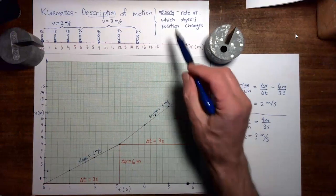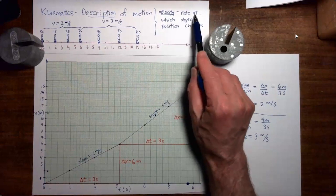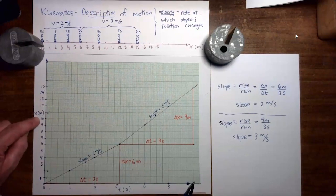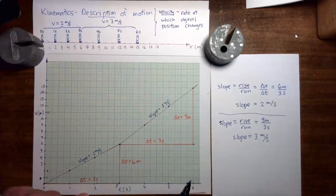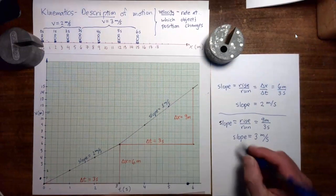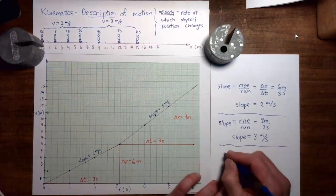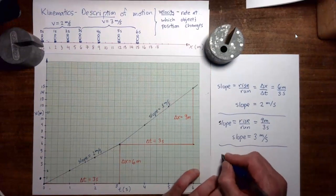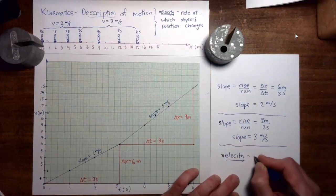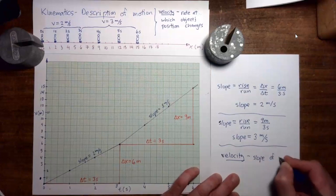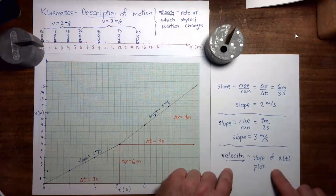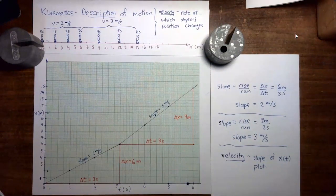So we started by defining velocity as the rate at which the position of an object changes, but now we see that when we plot the position of an object as a function of time, the velocity turns out to be the slope of that position versus time plot. That's our big punchline for this video: the velocity of an object is the same as the slope of the plot of position as a function of time. In the next video, we're going to take this result and use it to obtain some formulas to solve basic kinematics problems.